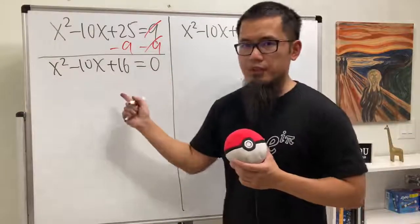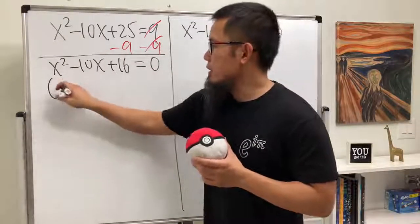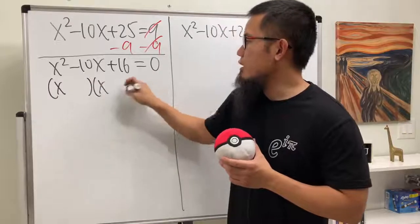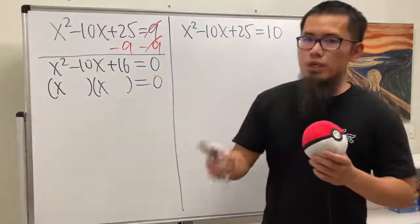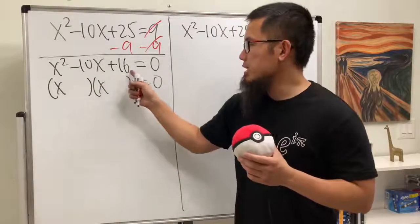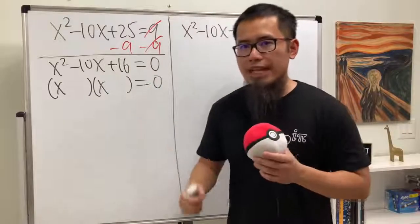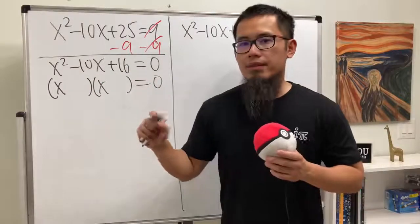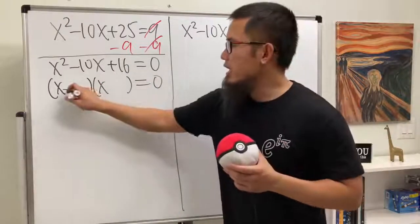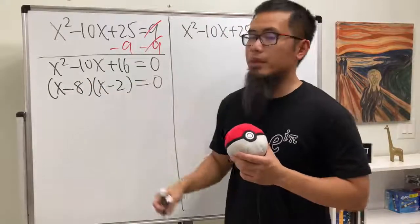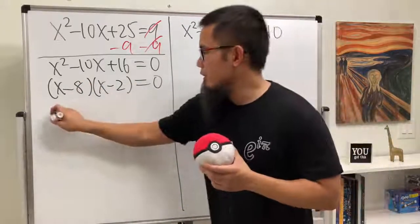And we can actually factor this, so that's very nice. x times x will give us x squared. And now we need two numbers. They multiply to be plus the 16, and together, they add up to be negative 10. Again, the correct combination is negative 8 and negative 2, right? Perfect. Now, we can finish this.